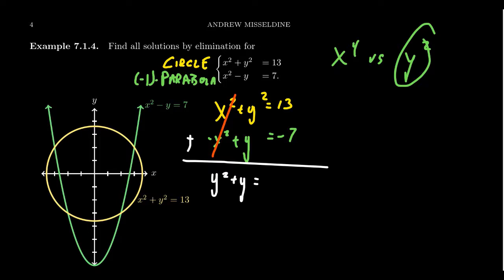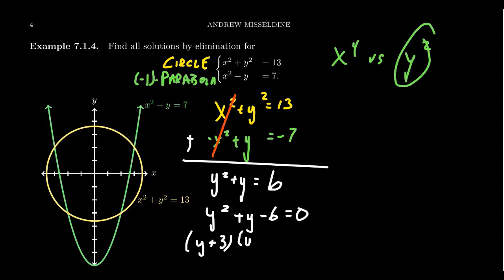On the right-hand side, 13 - 7 = 6. So this is a quadratic equation. Setting it equal to zero: y² + y - 6 = 0. We look for factors of -6 that add to 1: (y + 3)(y - 2) = 0. So y = -3 and y = 2.